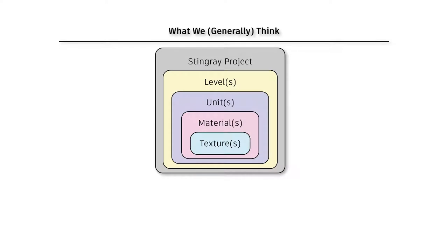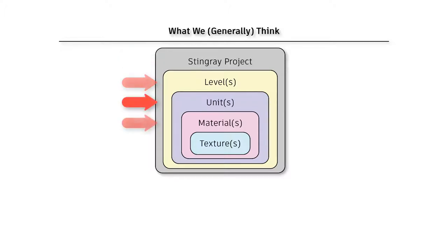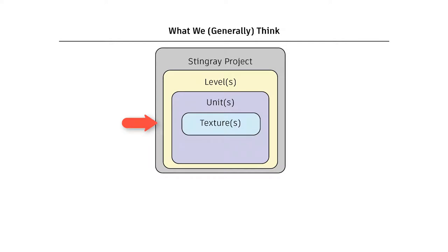As you can see on my screen right here, I've got this simple chart that shows what we think. For the vast majority of people, when they come into 3D or game development, this is the structure they think a project is constructed like. We're going to have our project, underneath the project we're going to have a level, in that level we're going to have some units, the units are going to have materials applied, and then underneath the materials are going to be the actual textures. Some people may even think we don't have a materials container at all — just project, levels, units, and textures.